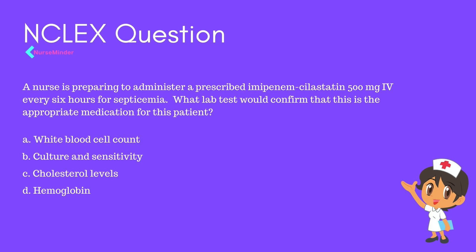Let's do an NCLEX question. As the nurse, you are preparing to administer imipenem-cilastatin 500 mg IV every six hours for septicemia. What lab test would confirm this is the appropriate medication? A) white blood cell count, B) culture and sensitivity, C) cholesterol levels, D) hemoglobin. The correct answer is B — culture and sensitivity. While the white blood cell count may be elevated, it does not confirm the appropriate medication. A culture and sensitivity is needed.